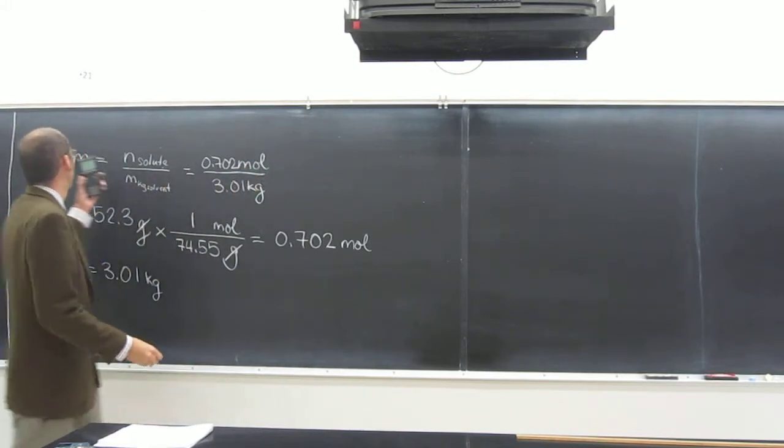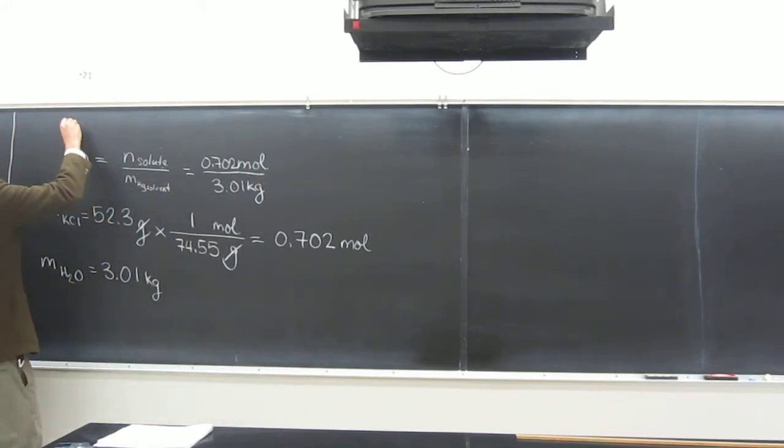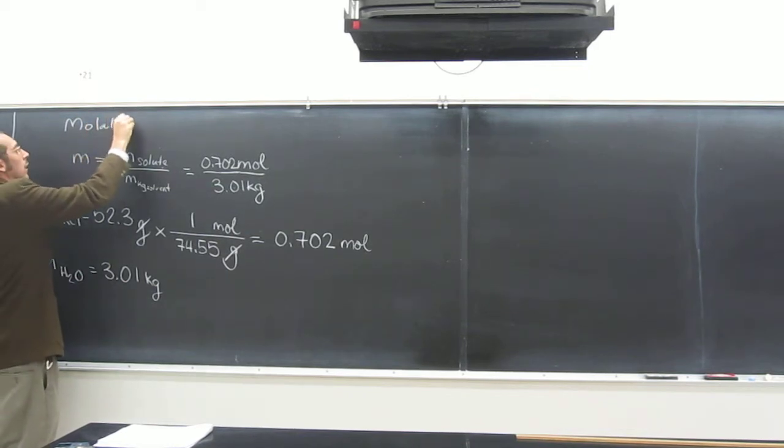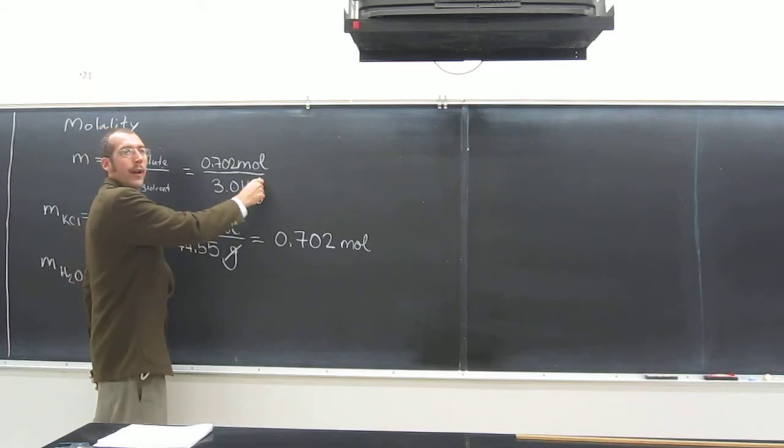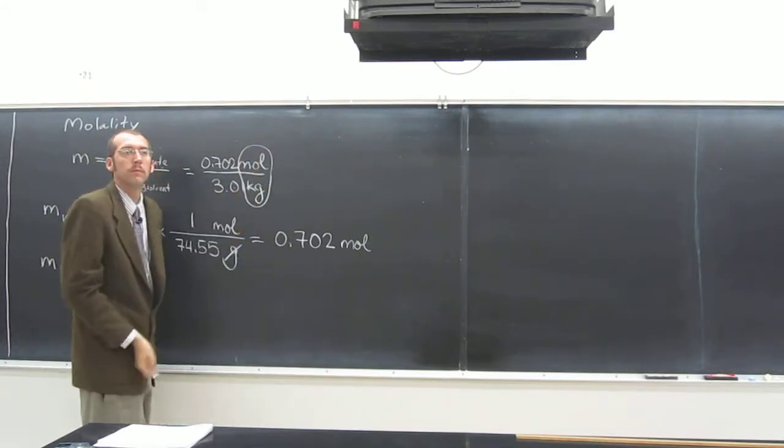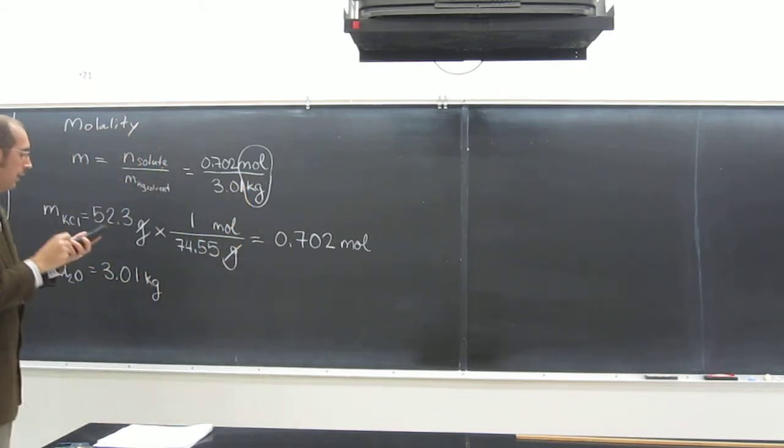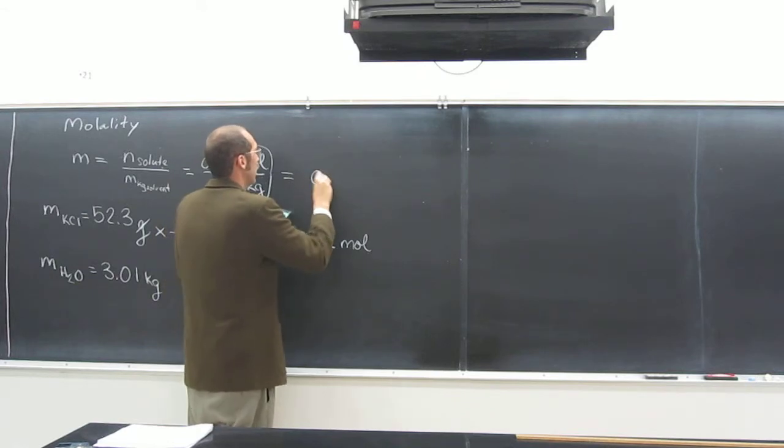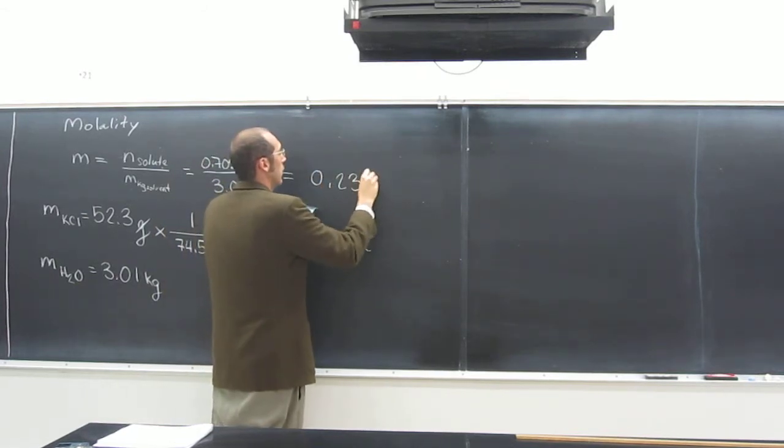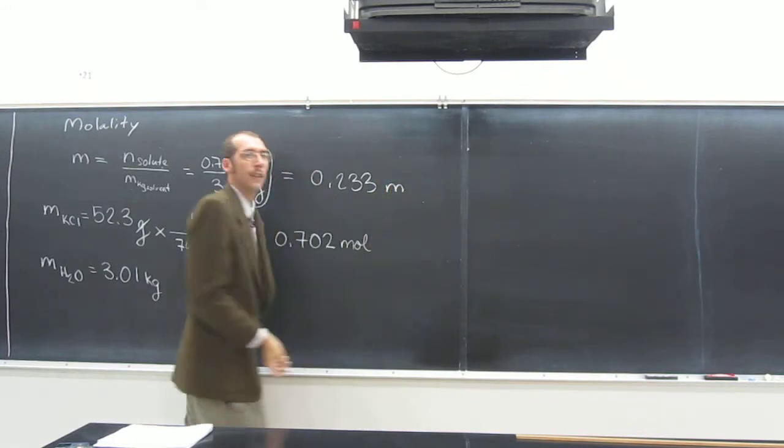And then we'll just plug that number in here. And remember, molality, it's easier to look at it from back here sometimes. So remember, molality is like the shorthand way of writing this, moles per kilogram. So all we've got to do is take that 0.702 and divide it by 3.01, and we get the same number we got on Wednesday, 0.233.